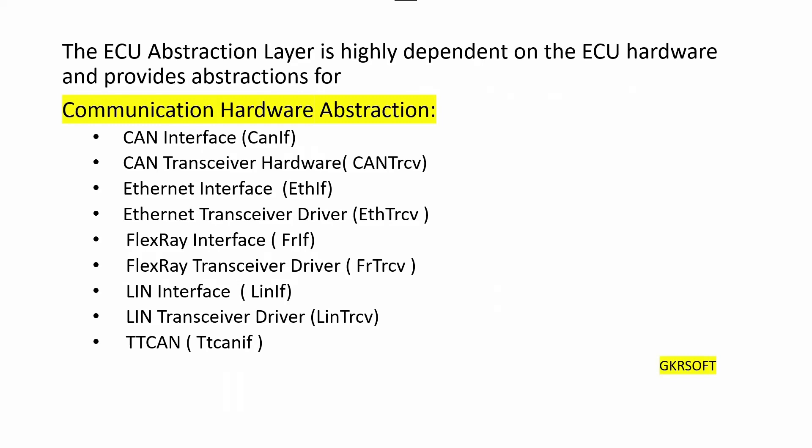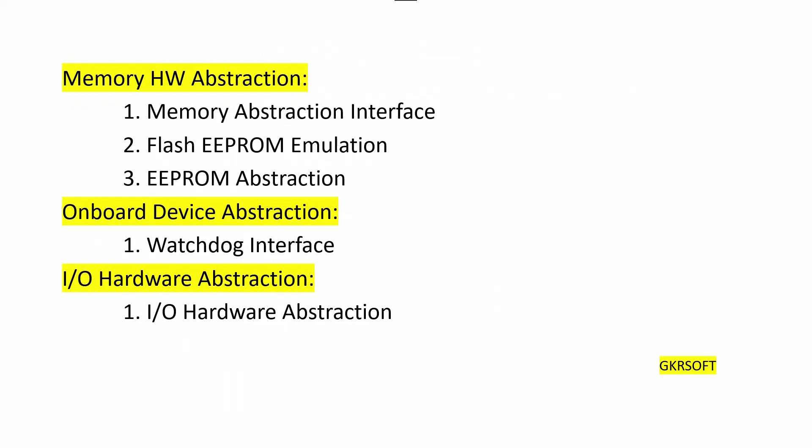Communication hardware abstraction includes: CAN interface, CAN transceiver driver, Ethernet interface, Ethernet transceiver driver, FlexRay interface, FlexRay transceiver driver, LIN interface, LIN transceiver driver, and TT-CAN. Memory hardware abstraction includes: memory abstraction interface, flash EEPROM emulation, and EEPROM abstraction. Onboard device abstraction includes the watchdog interface. IO hardware abstraction is also part of the ECU abstraction layer.